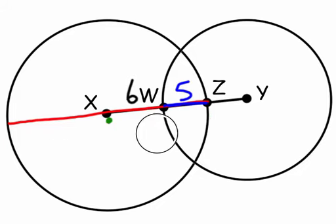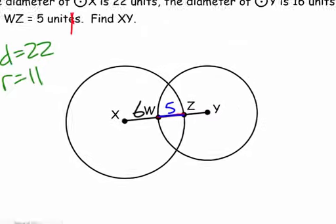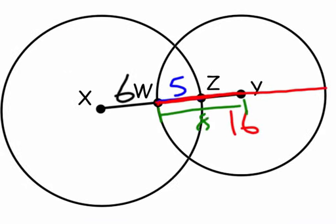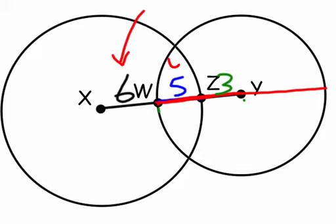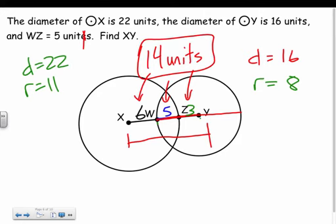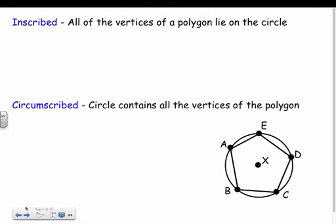Now for circle Y: the diameter is 16, so the radius is 8. That means ZY must be 3, since WZ is 5 and 5 plus 3 equals 8. To find the total distance XY, I add all the pieces: 6 plus 5 plus 3 equals 14 units. Just look closely at your circle, take your time, and don't rush.